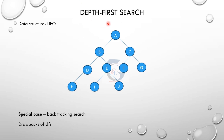Depth-first search uses a stack data structure — last in, first out (LIFO). A special case is backtracking search. Advantages of DFS: less memory and less time. If we need to backtrack to find the goal node, DFS follows a depth path. The drawback is it may not find the optimal solution.